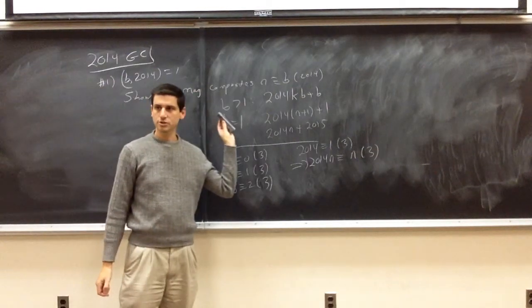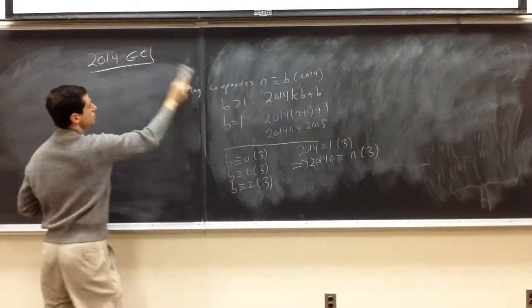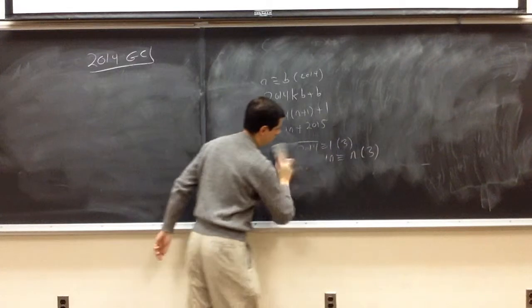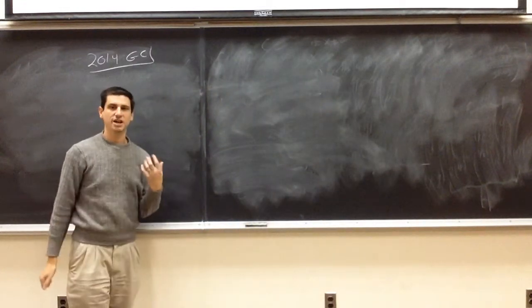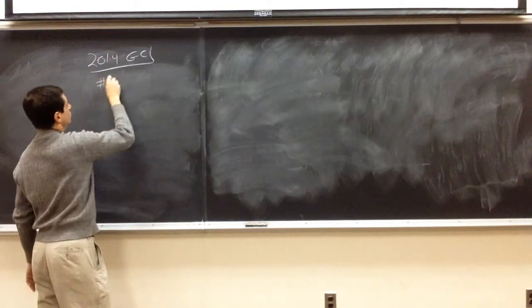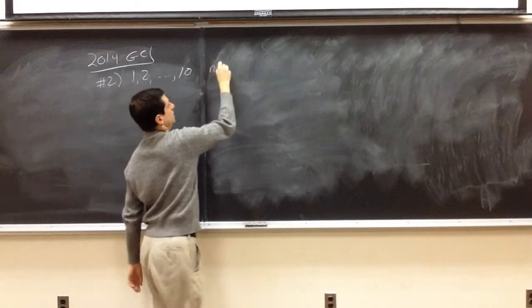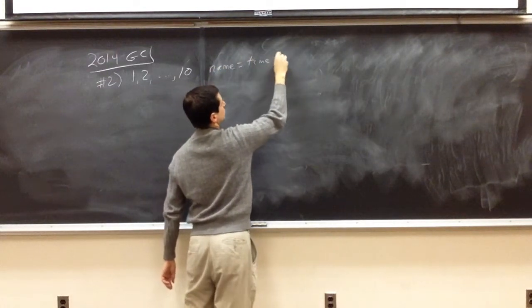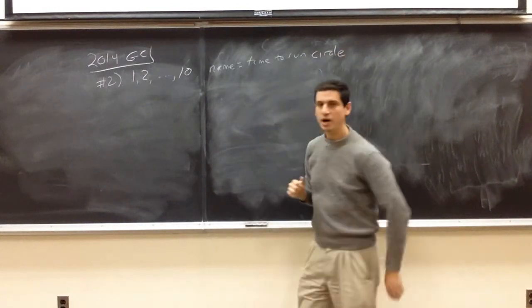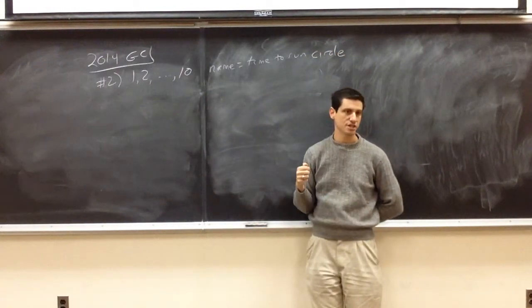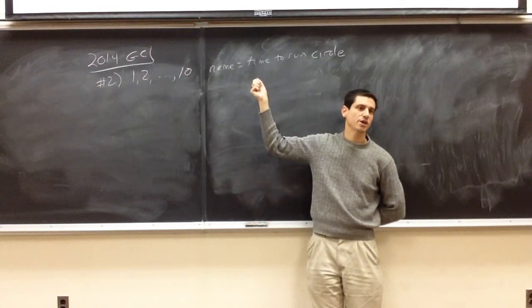Was number 2 the horses running around in circles? Okay. So, for this one, again, this is a very standard problem. What I like about it is the year actually works out very nicely for this. So, the horses are named 1, 2, about the 10. Name equals time to run a circle.